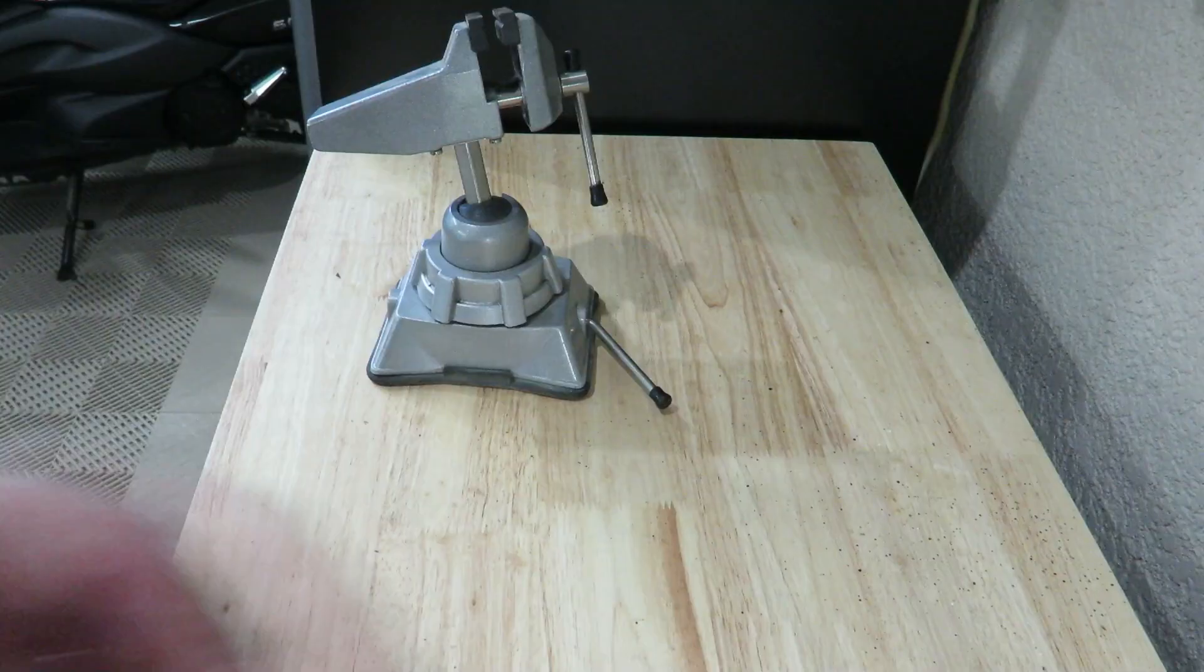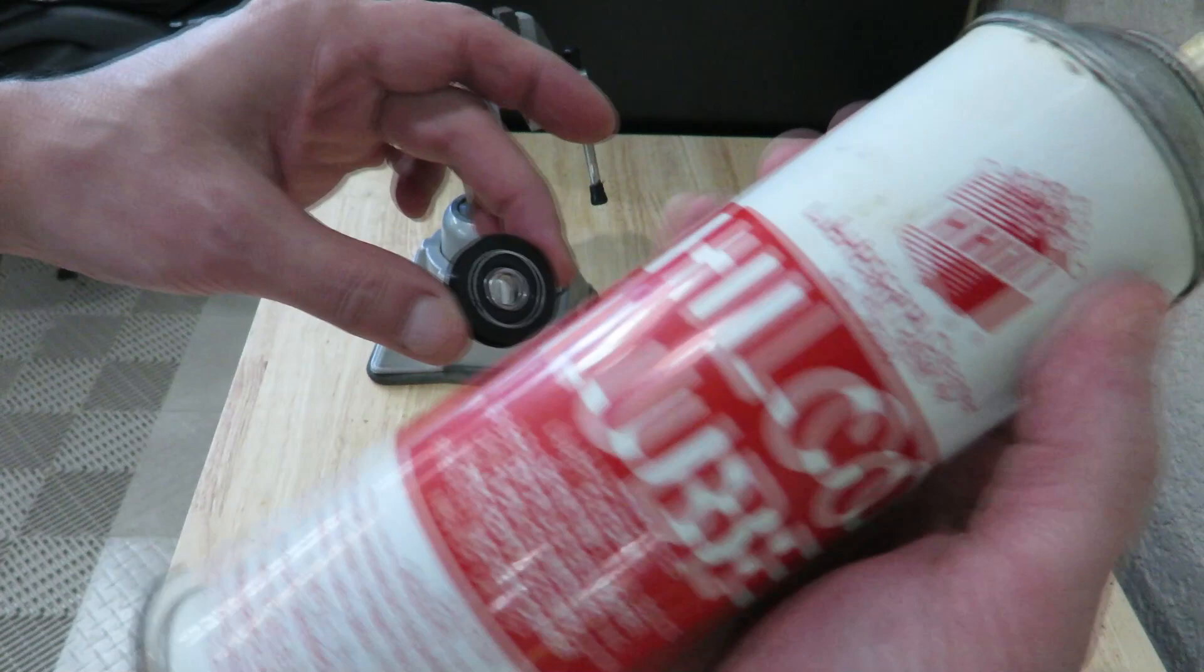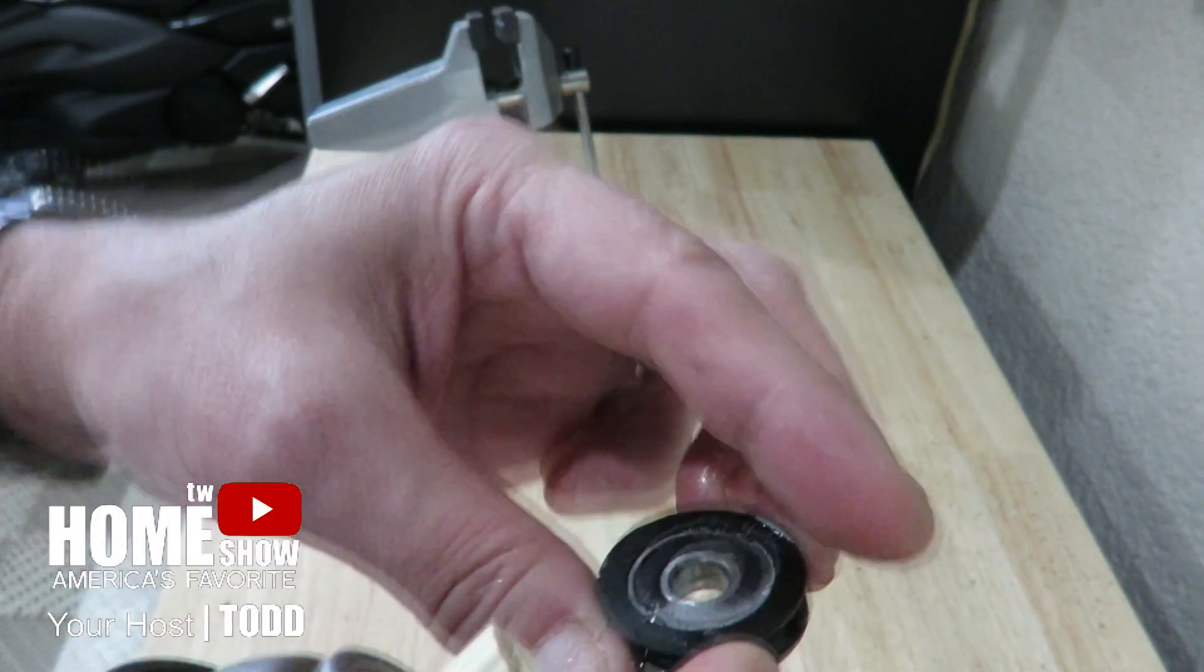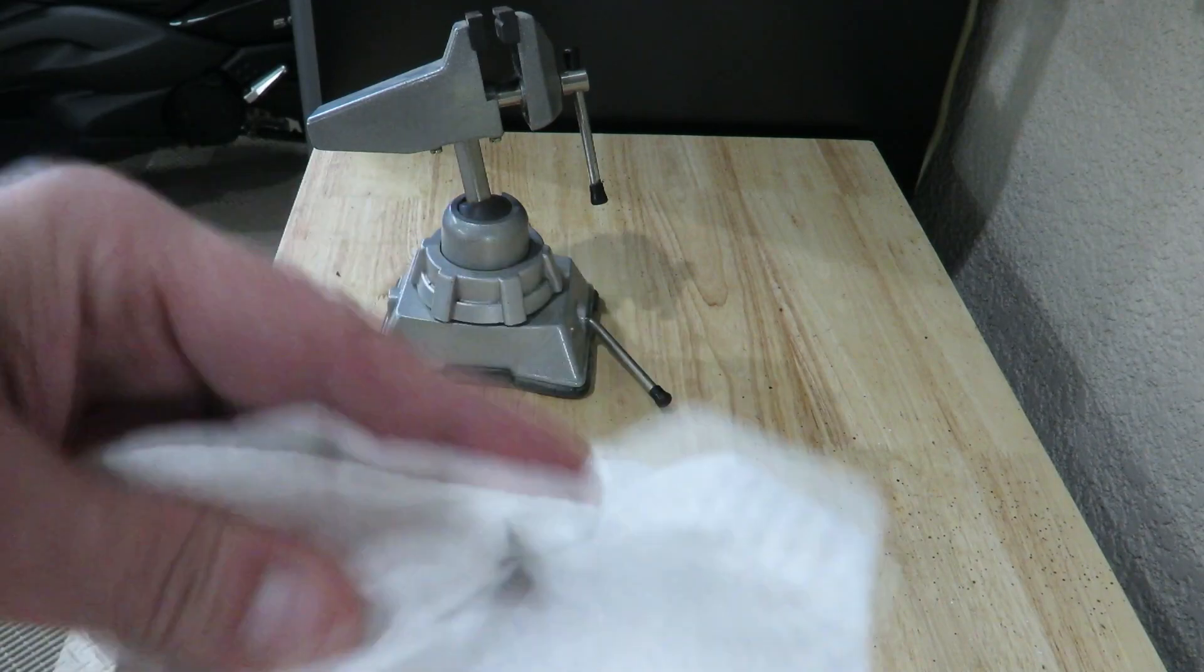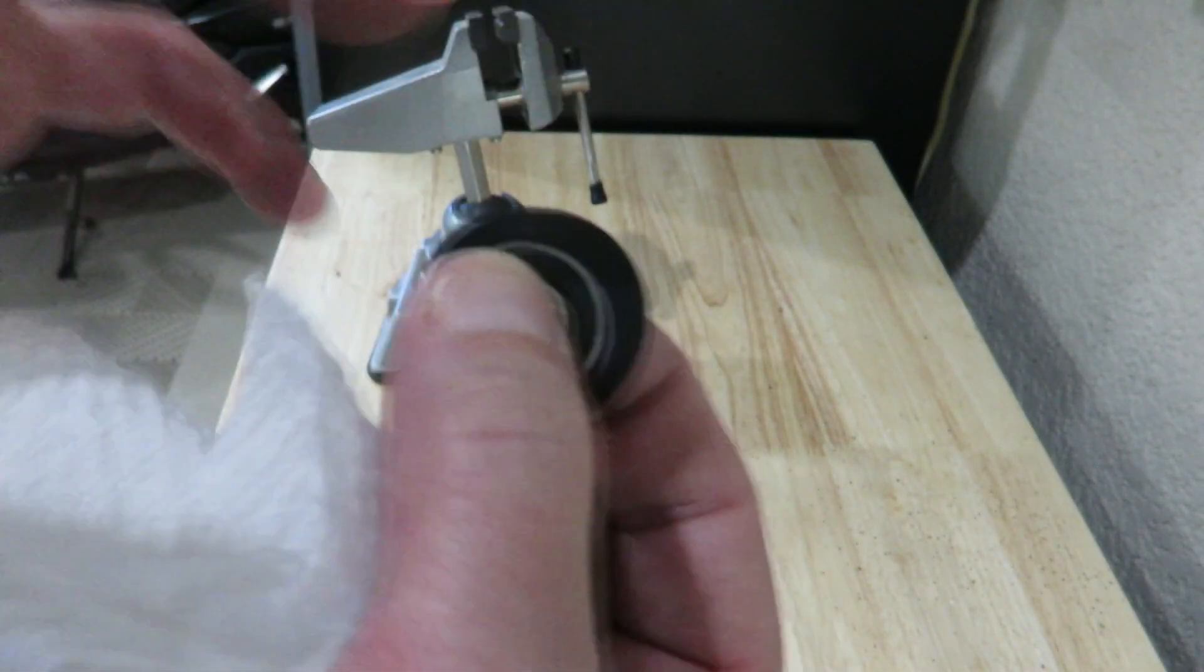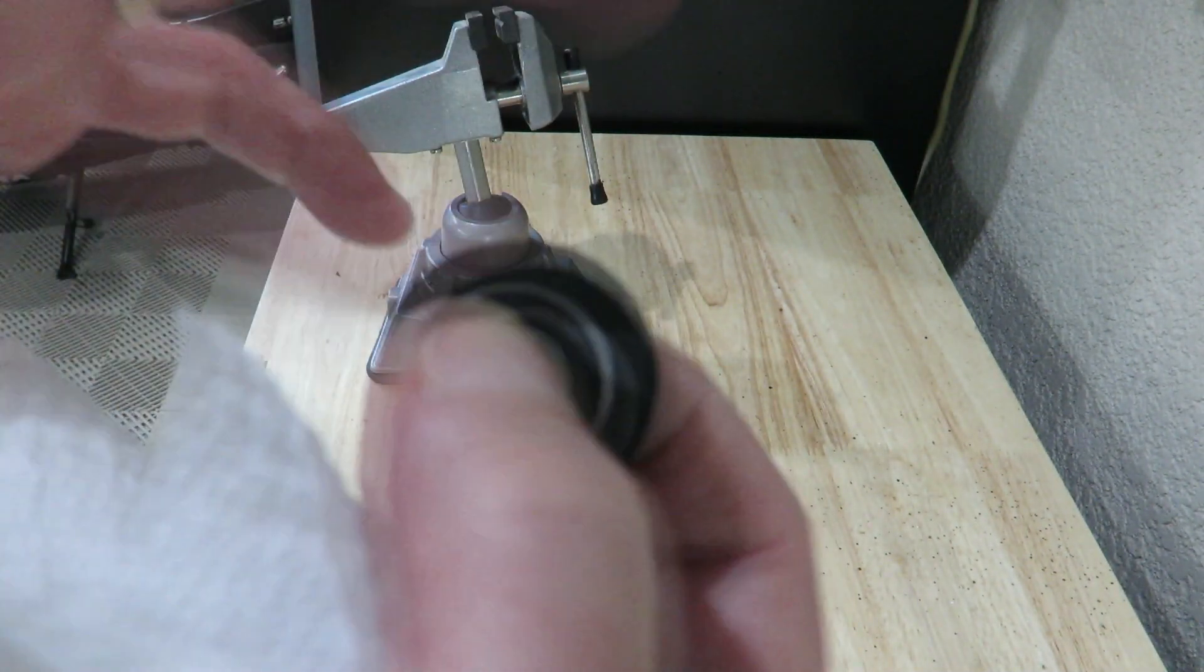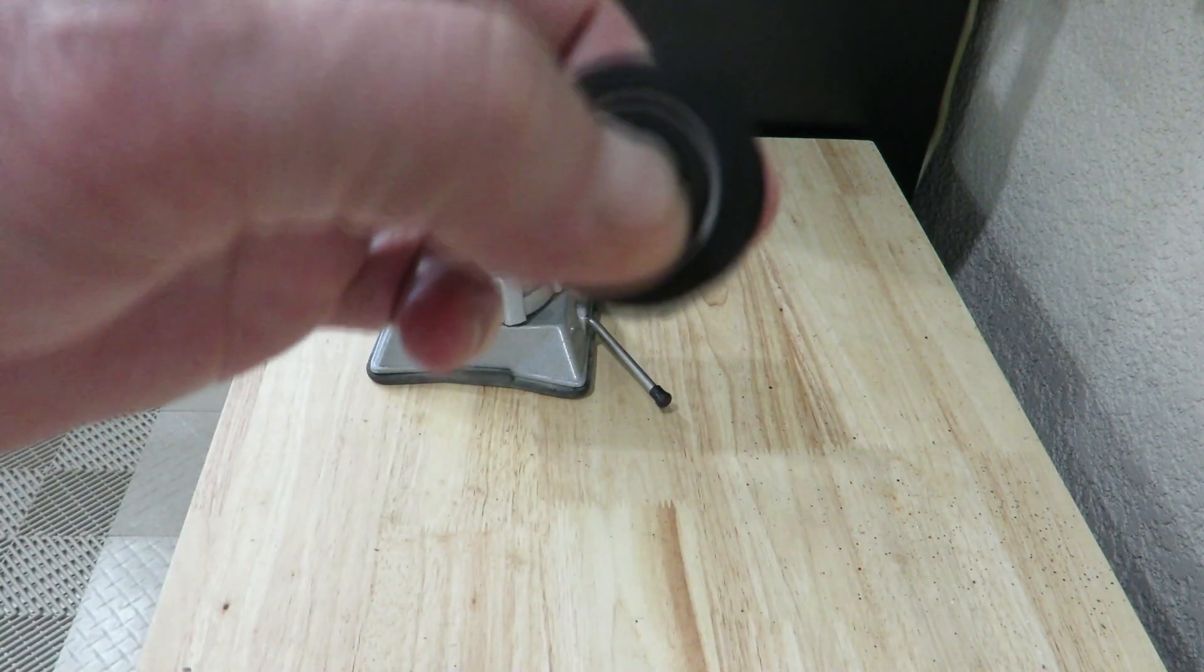Now I also recommend just take some WD-40 or some silicone lube and just spray it on that bearing, both sides. Then I just take a paper towel, wipe off the excess. Just try to spin it in there until it's spinning really well. Nice.